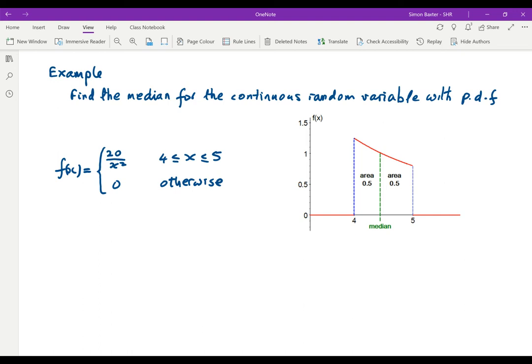If we're looking for the median for this function, we're looking for the value which splits the area under the graph into two equal parts. The probability that we are less than the median is a half. The probability that we are greater than the median is half. That's what the median really means.